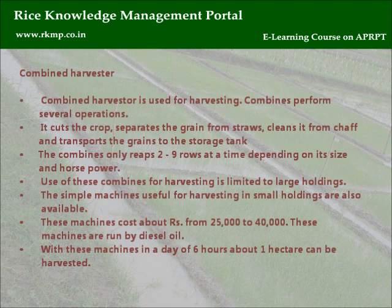These smaller machines cost from Rs. 25,000 to Rs. 40,000, are run by diesel oil, and can harvest about 1 hectare in a day of 6 hours.